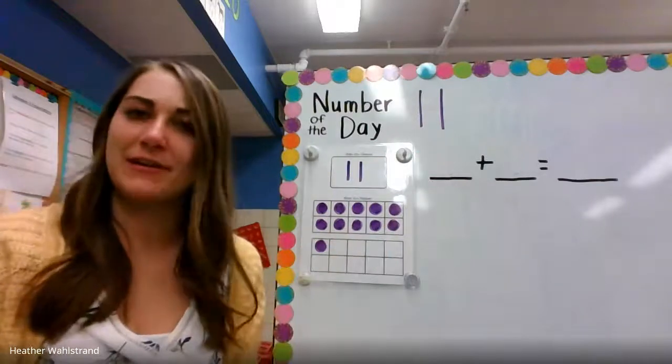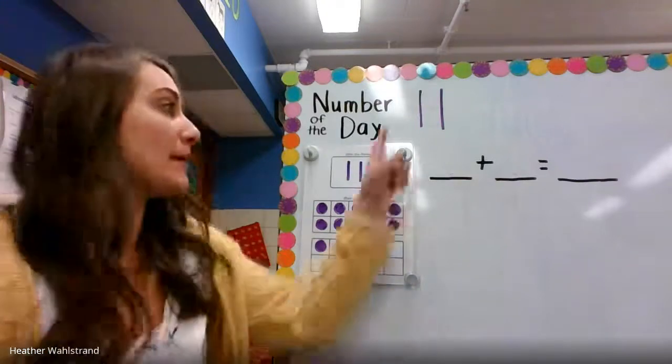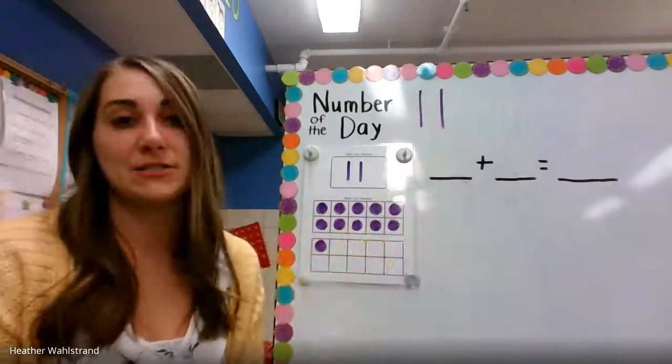What does 11 look like? That's right. It's a one and a one, so you can write 11 by making two ones right next to each other.